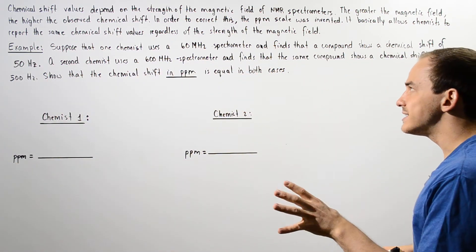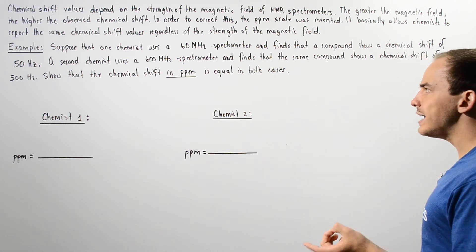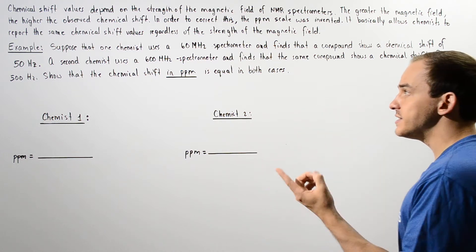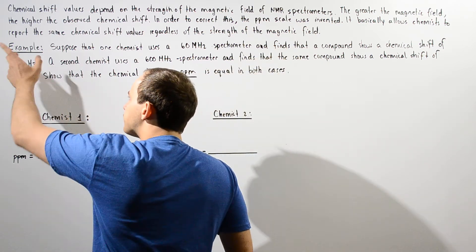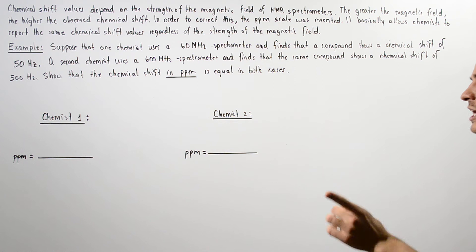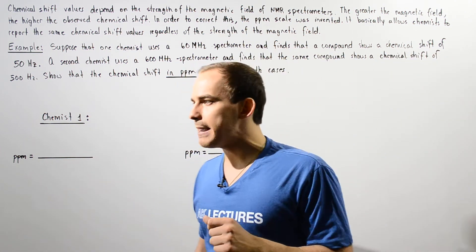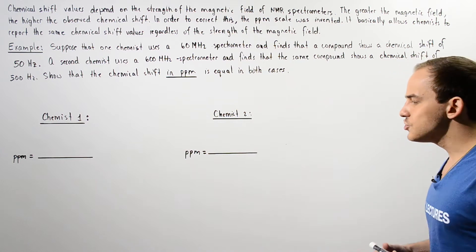So chemist 1 uses a spectrometer that has a lower frequency rating than chemist 2. And so we see that the chemical shift given in hertz is lower as a result. But if we convert the two values into parts per million, we get the same value as we'll see in just a moment.